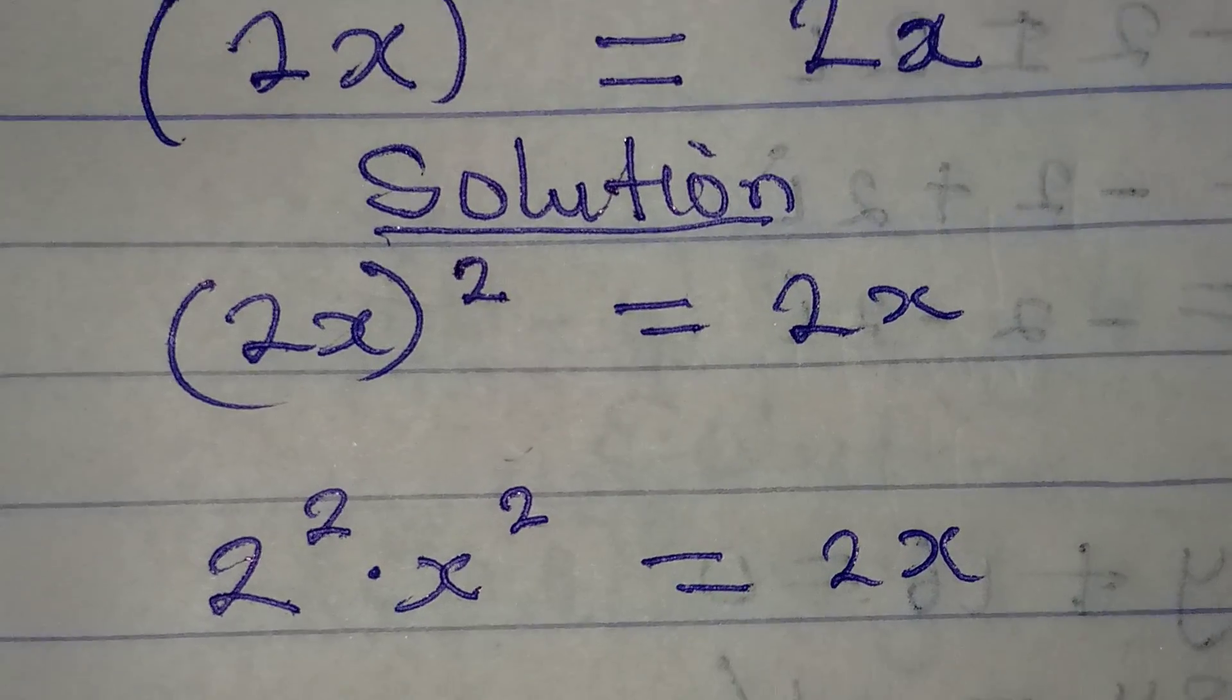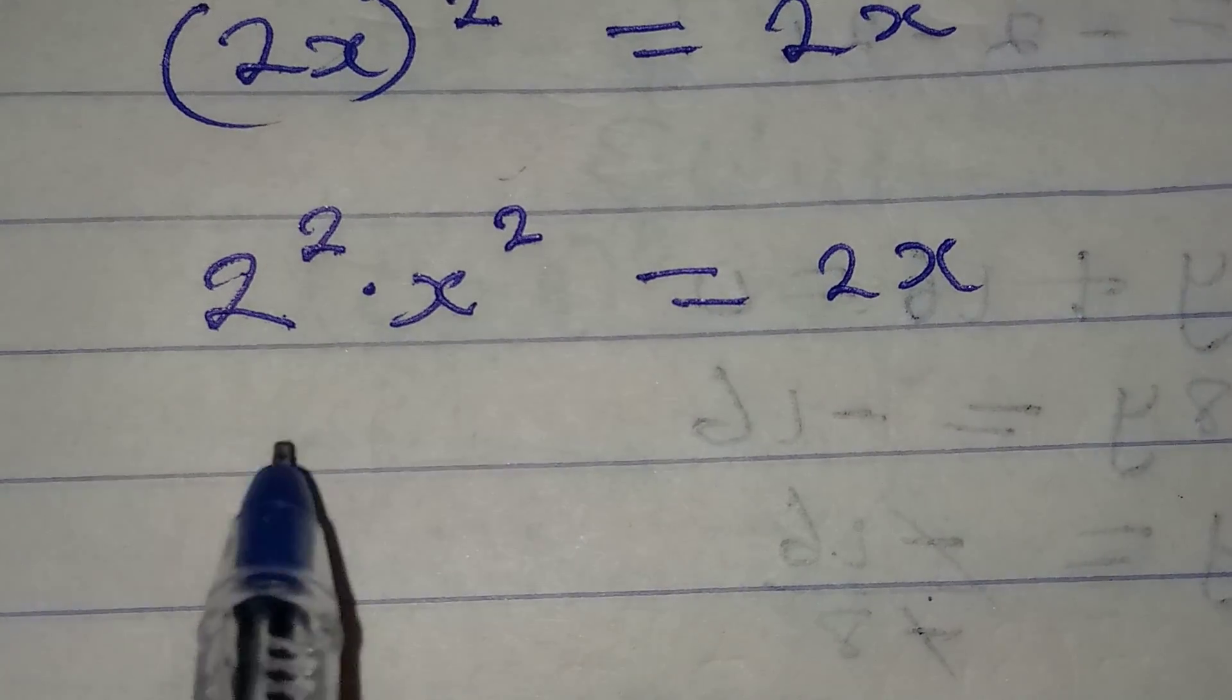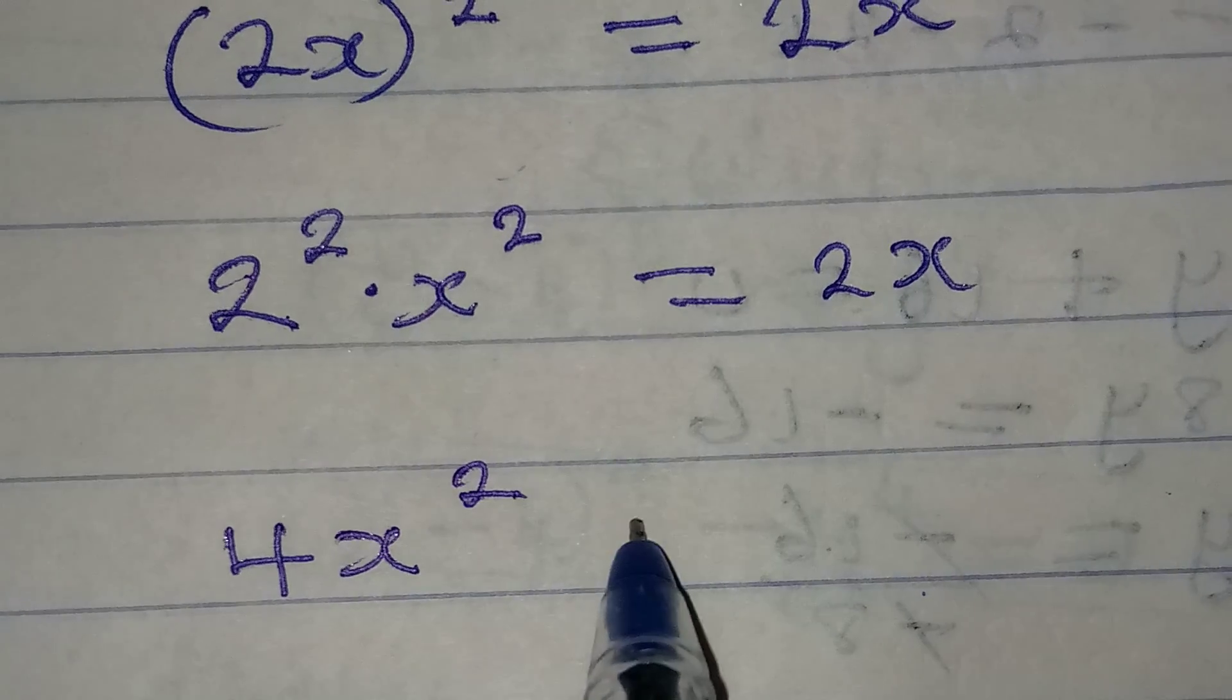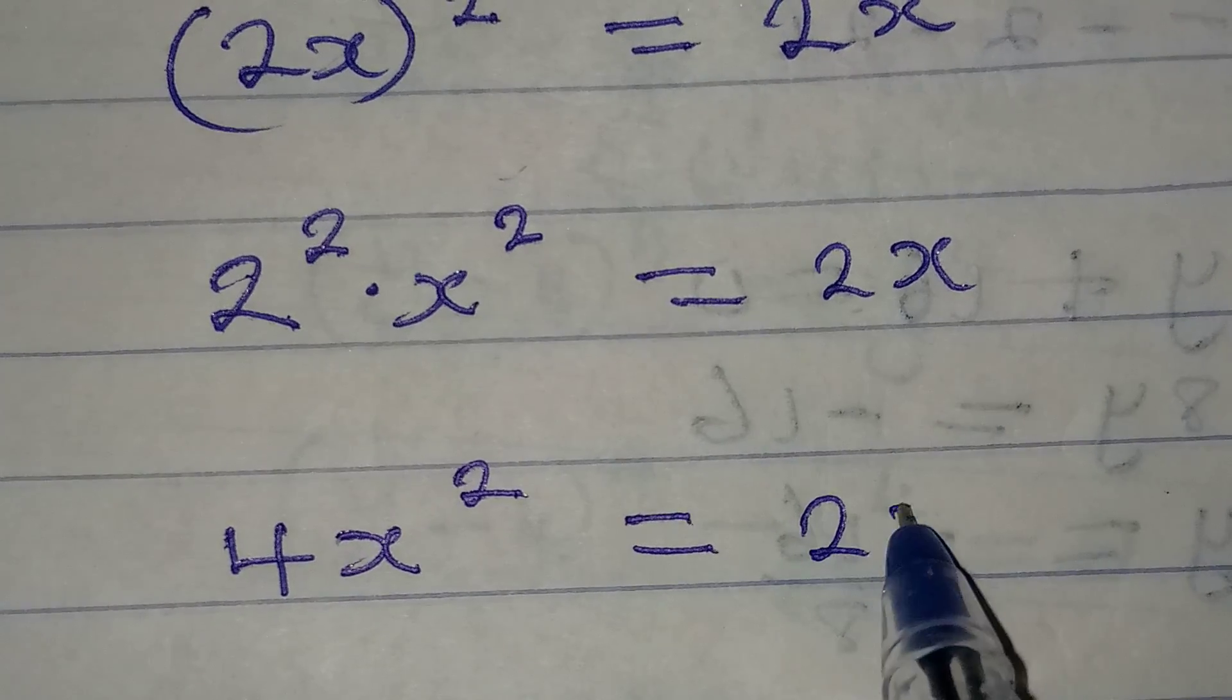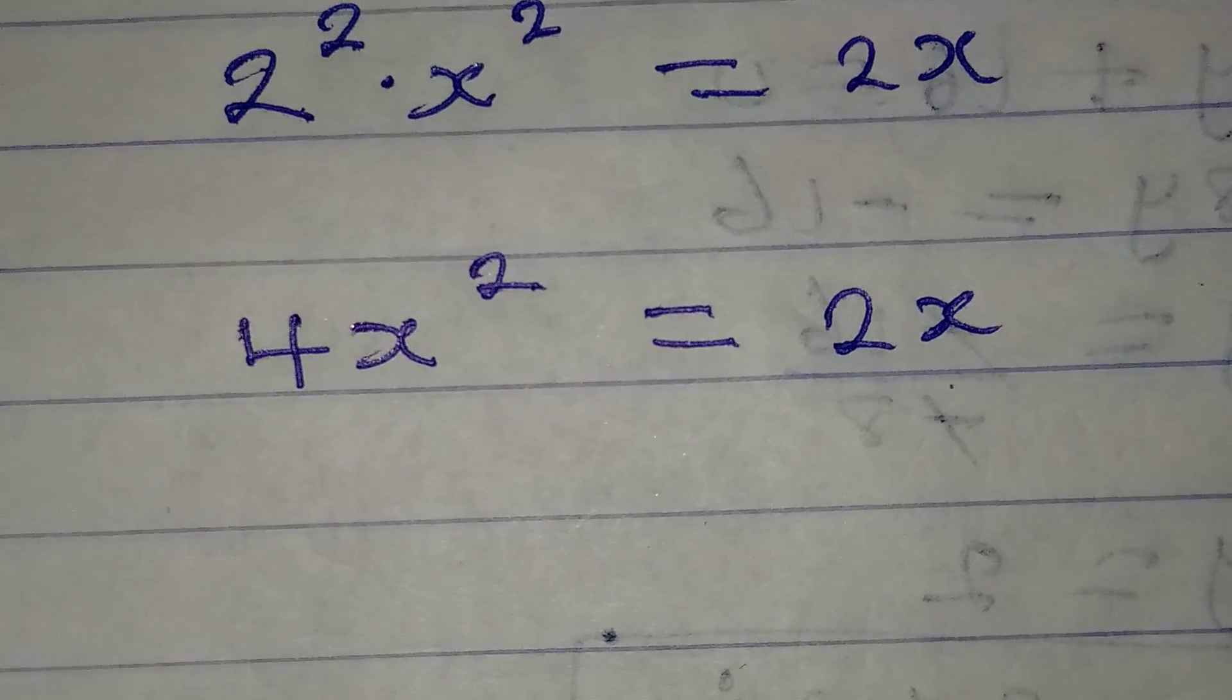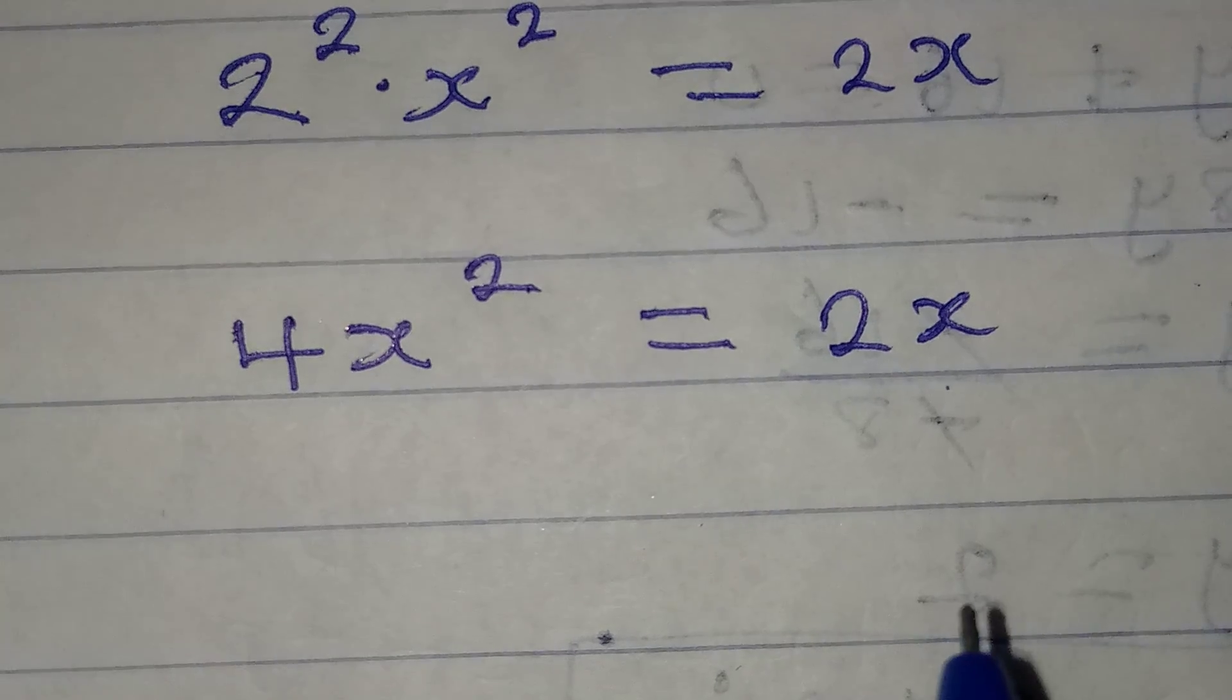I hope you agree with me. From here we have 4x² equal to 2x. Now if you divide both sides by 2x you're going to be wrong, okay?